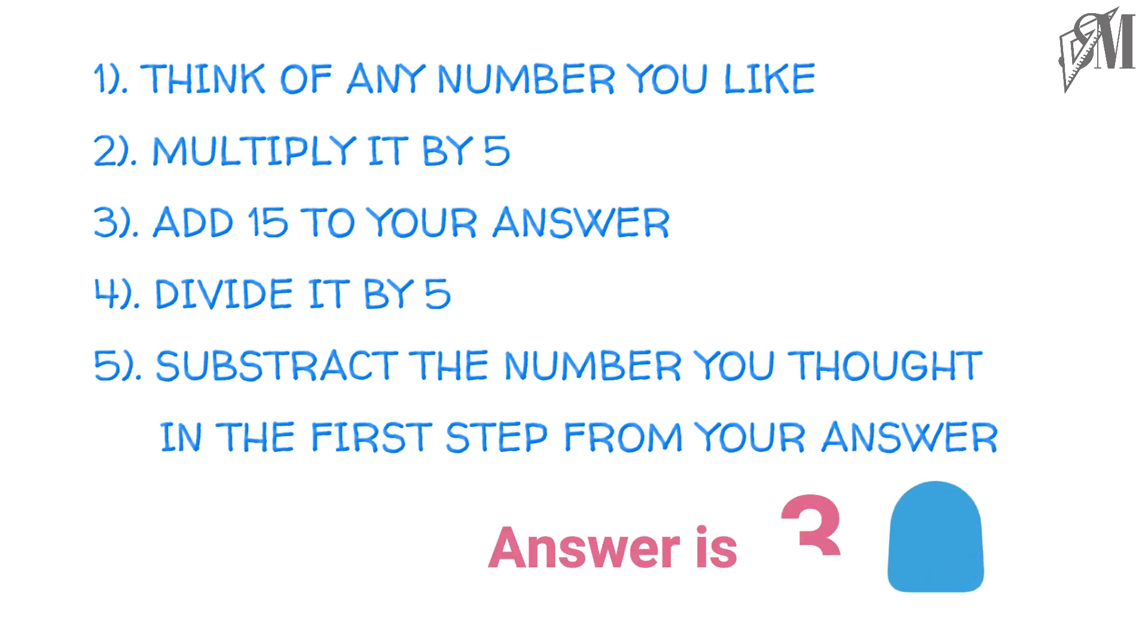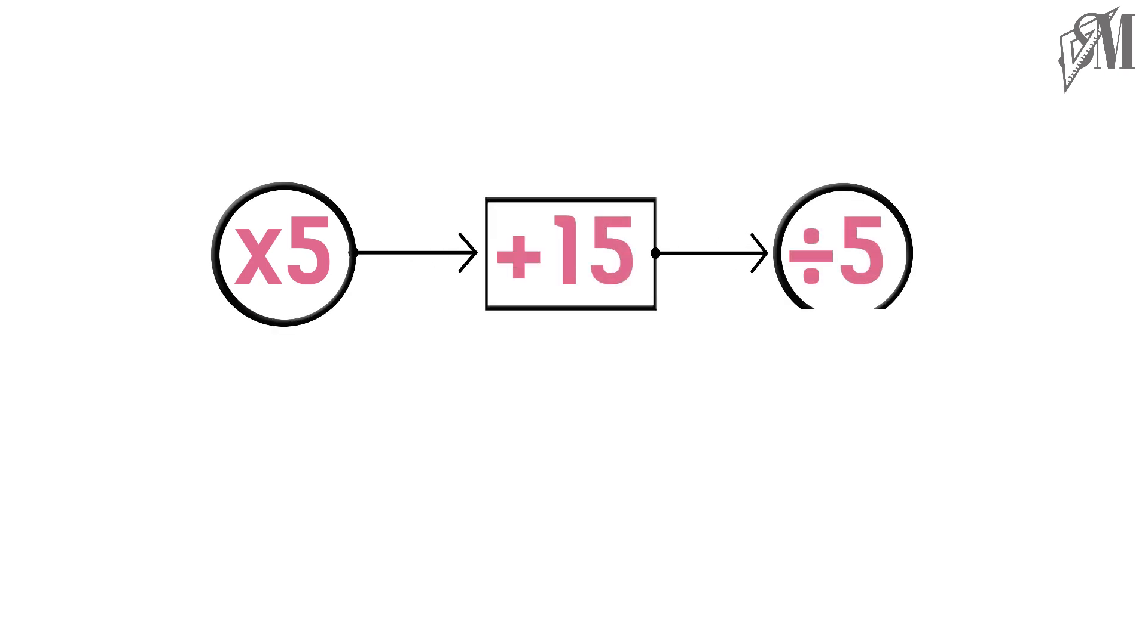This is the trick. Look at the steps carefully. I told you to multiply your number by 5, and then add 15, and then divide by 5. If you note down carefully, you can see the multiplication and division is done by the same digit, that is 5 in this case.